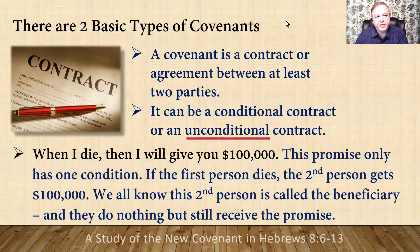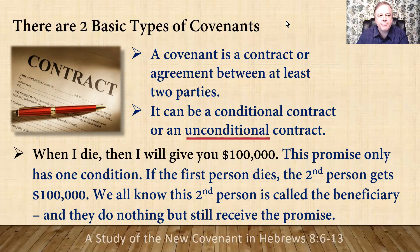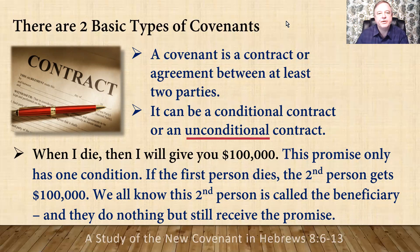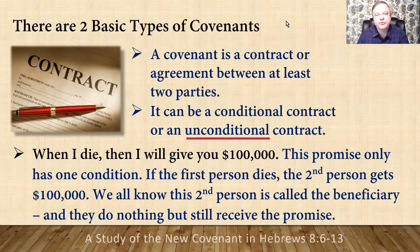Here's an example: when I die, then I will give you a hundred thousand dollars. That's a classic life insurance policy. This promise only has one condition in it — if the first person dies, the second person gets a hundred thousand dollars. The second person is called the beneficiary, and they do nothing. They do not have to perform, but if the first party performs, then they get to receive the benefit of the promise.